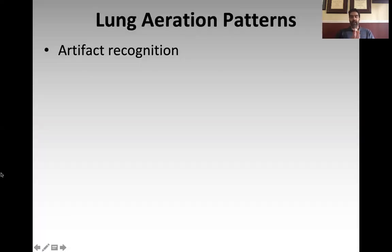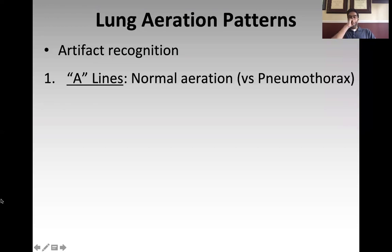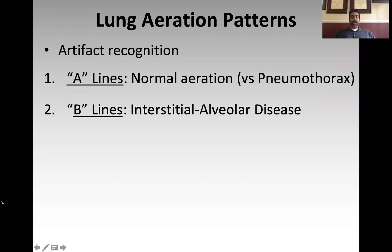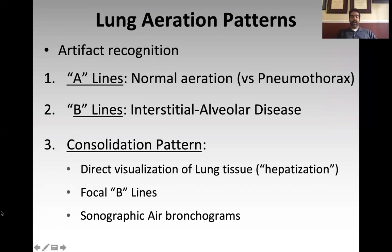Now let's talk about lung aeration patterns. The lung is an air-filled structure, so when you ultrasound it, you get artifacts. But there are very predictable patterns of artifact that give you valuable information about the underlying lung tissue. There are three artifactual patterns relevant to us: the A-line pattern, which means either normal aeration or pneumothorax; the B-line pattern, representing some sort of interstitial alveolar disease; and the consolidation pattern, where the lung is no longer aerated and you're directly visualizing lung soft tissue.